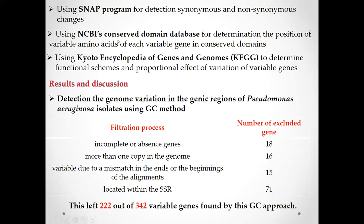We also used the NCBI Conserved Domain Database to detect whether variation is located within a conserved domain. As we know, a domain of the protein defines the function on the three-dimensional structure of the protein. If variation is located within a domain, it is important because that domain is responsible for the function and three-dimensional structure of the protein. We also used the KEGG — Kyoto Encyclopedia of Genes and Genomes — to detect functional schemes and the proportional effect of variation for each variable gene.